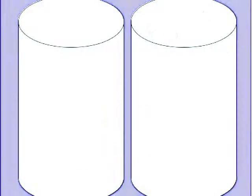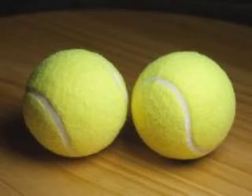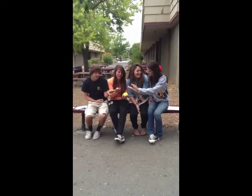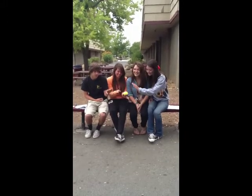How does changing mass with constant volume change the rate that an object will fall to the earth? We predict that the balls will fall at the same time. Okay.